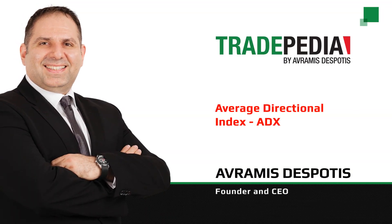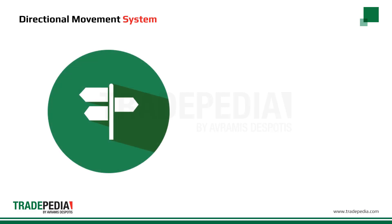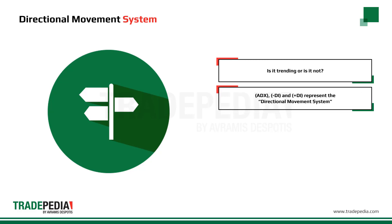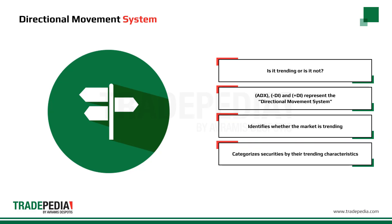Average Directional Index – ADX. In this video you will learn how directional movement is used to construct the ADX indicator and how to interpret the ADX signals. As we have seen through this guide, the trend is your friend. But the million dollar question is: is the security trending or is it not? The ADX, minus DI, and plus DI represent the directional movement system, which first identifies whether the market is trending before providing signals for trading the trend. Created by Wells Wilder, this indicator categorizes securities by their trending characteristics.